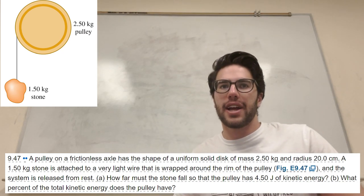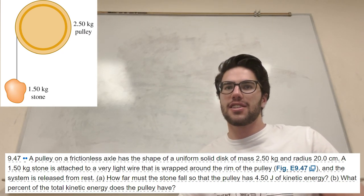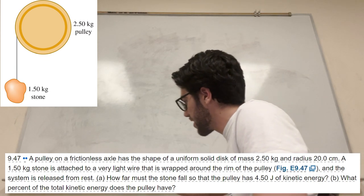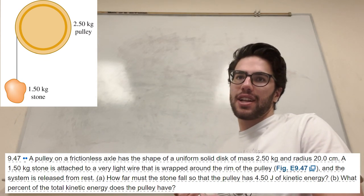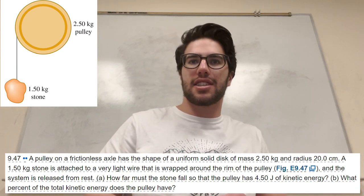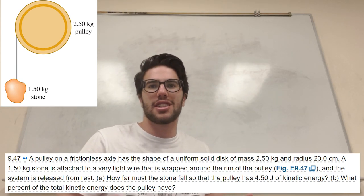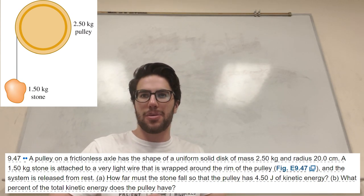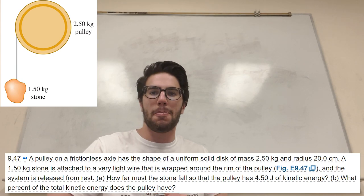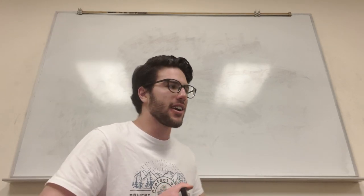What's up, Cal gang? Alright, so we got this pulley on a frictionless axle. It has a shape of the uniform solid disk, and it's dropping this mass down, and it gives us that how far must the stone fall so that the pulley has 4.5 joules of kinetic energy. Okay, so how do we get started on this?